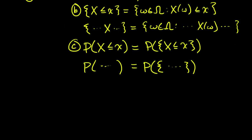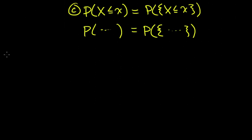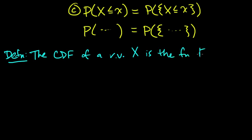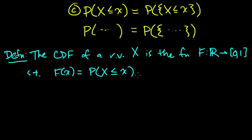Now, we're ready for the next definition, which is the CDF of a random variable. So the CDF, cumulative distribution function of a random variable, which we often abbreviate by RV, is the function, capital F, we usually write capital F, from the reals to the interval from 0 to 1, such that f of x equals the probability that the random variable X is less or equal to the value little x. So that's a CDF.